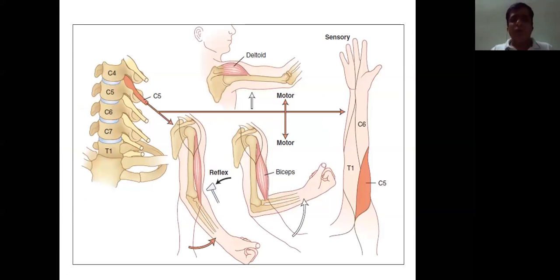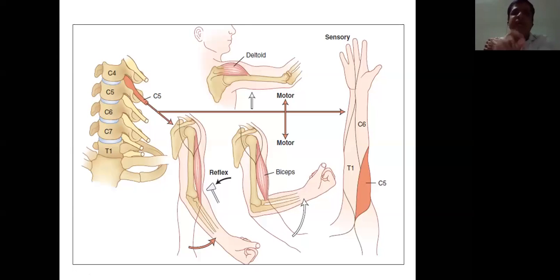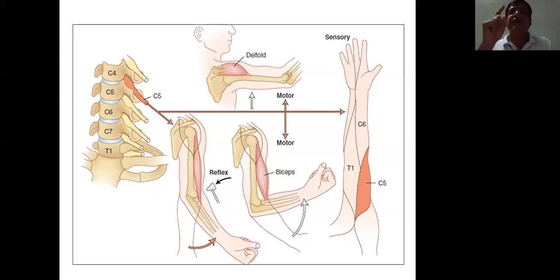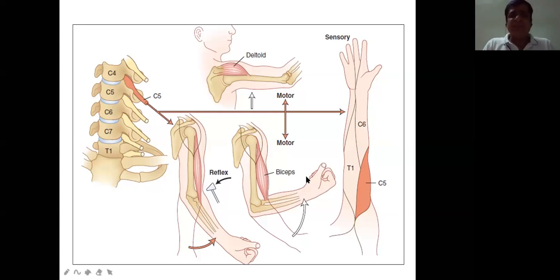For C4-C5 disc prolapse, the C5 nerve root is involved. Motor testing for C5 includes shoulder abduction by deltoid and elbow flexion by biceps — elbow flexion is predominantly C5, also partly C6. Sensation is along the anterolateral aspect of the shoulder. The reflex is the biceps reflex.